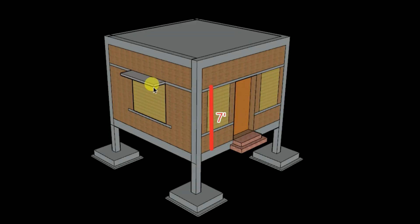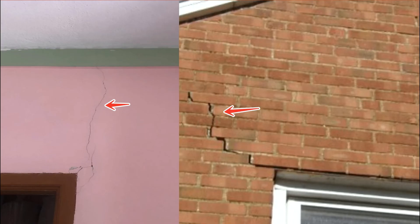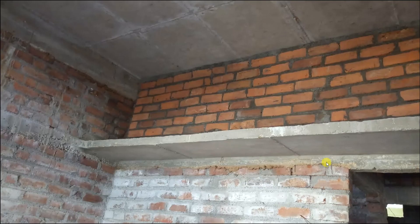The lintel beam is also necessary to carry the sajja load — the sajja projection is provided from the lintel beam. If we don't provide the lintel beam properly, cracks will appear at lintel level. There is also a slab projection for loft purpose; if you want that kind of slab, you provide through lintel; otherwise you can provide cut lintel.